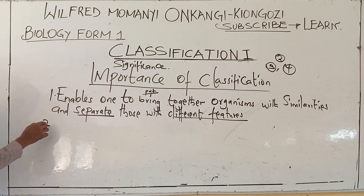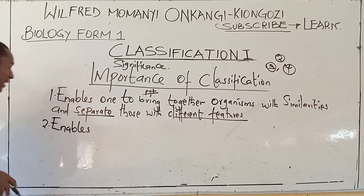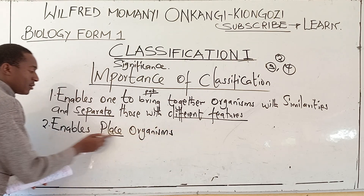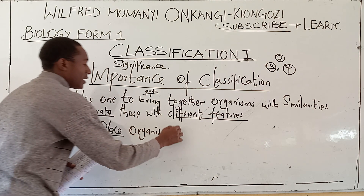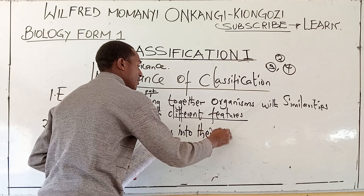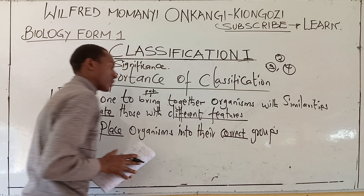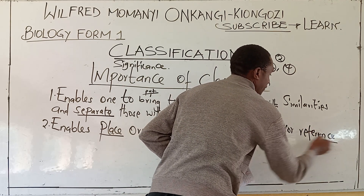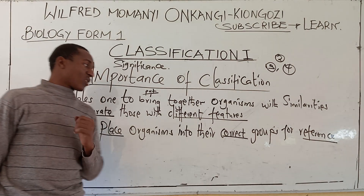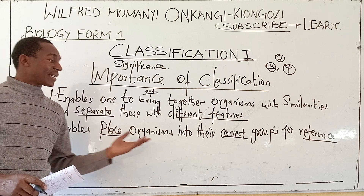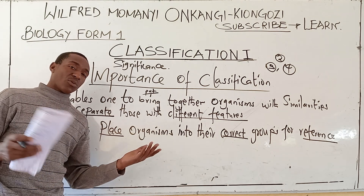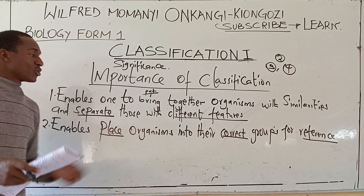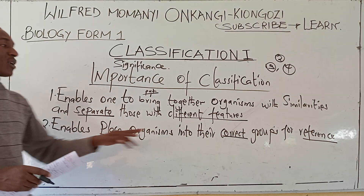Number two: it also enables one to place organisms in their correct groups for reference. If organisms are placed in their correct groups, you can refer to them in the future. If you become a scientist, a taxonomist, a botanist, or whatever, you must refer to organisms in their correct groups. If you don't, confusion and problems will arise and you may not be able to do a good reference.